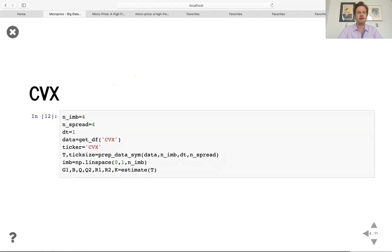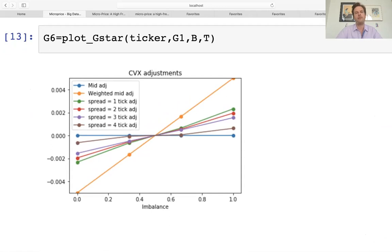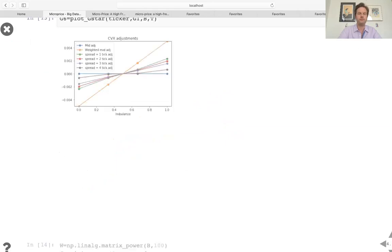Now looking at CVX and running the same thing with a few slightly different parameters here, for imbalance buckets and for spreads, because CVX is a different kind of stock, often known as small tick stocks. And we get similar pictures where the micro price adjustments fall in between the mid and the weighted mid. And in fact, you can see that the tighter the spread, the steeper the adjustment, again, indicating that tighter spreads leads to more information at the top of the order.